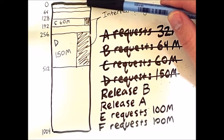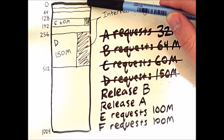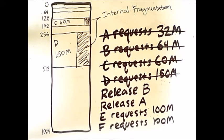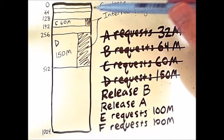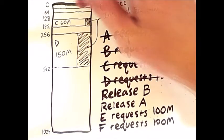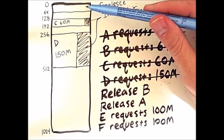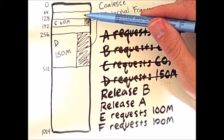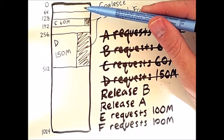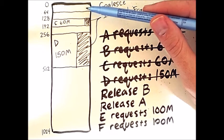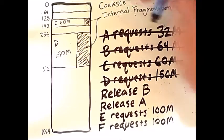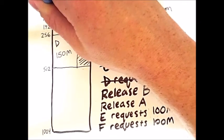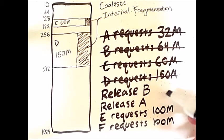These two 32 megabyte slots or buddies are empty, and so they coalesce into one region like so. However, now we have two empty 64 megabyte regions, which are buddies. So these two buddies can also coalesce to create one 128 megabyte region. These two processes have now been released from memory.